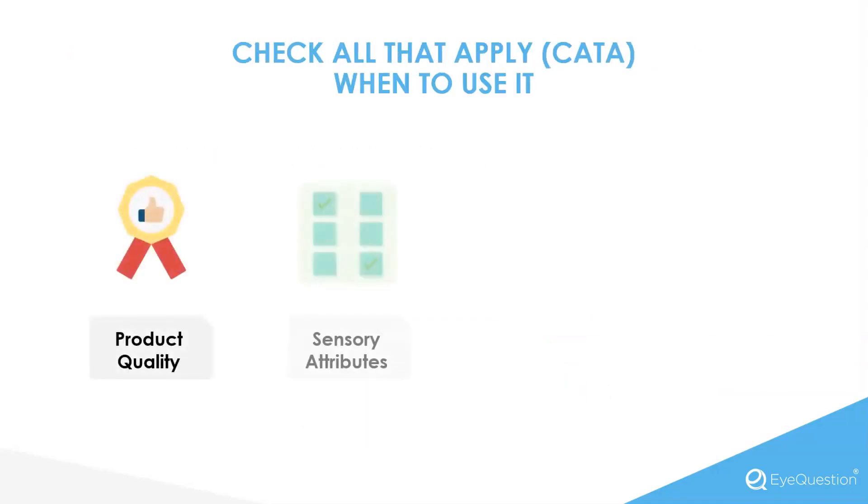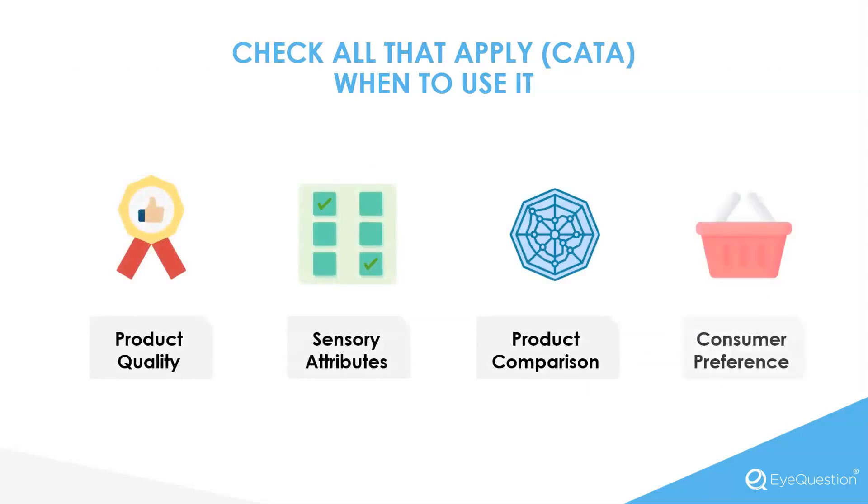Check All That Apply is ideal for situations where you need to understand the attributes characterizing a product. It's perfect for tasks such as improving product quality by pinpointing specific sensory attributes, comparing different products, and understanding consumer preferences.